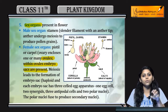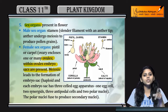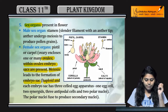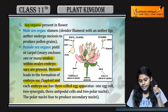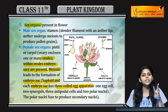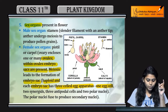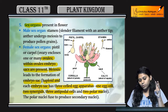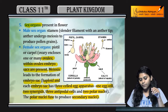The embryo sac is present within the ovules, and meiosis leads to the formation of the embryo sac. The embryo sac is haploid, and each embryo sac has a three-celled egg apparatus: one egg cell, two synergids, three antipodal cells, and two polar nuclei at the center, which produce the secondary nucleus.